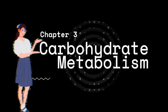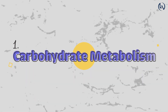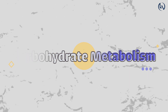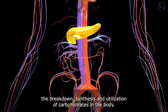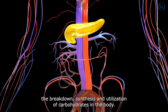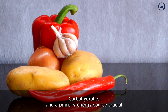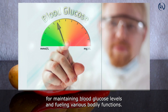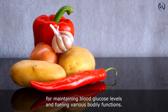Chapter 3: Carbohydrate Metabolism. Carbohydrate metabolism involves the breakdown, synthesis, and utilization of carbohydrates in the body. Carbohydrates are a primary energy source, crucial for maintaining blood glucose levels and fueling various bodily functions.